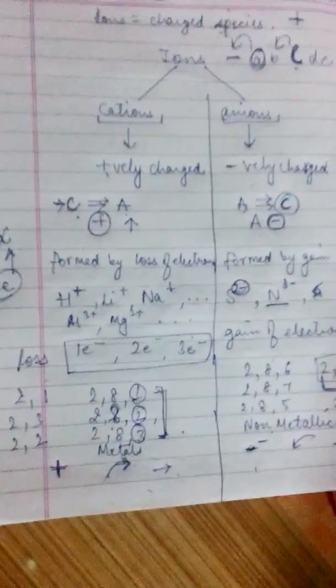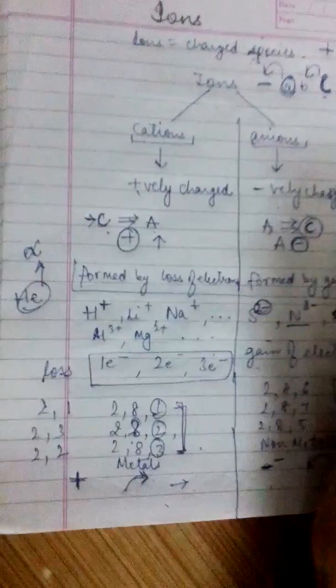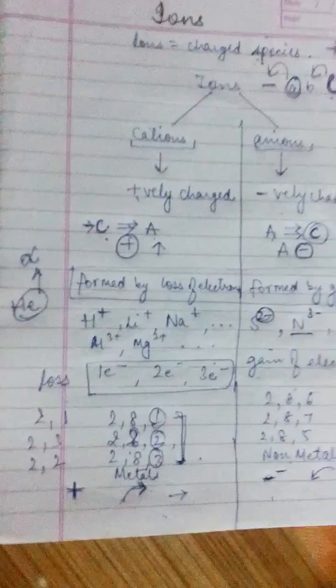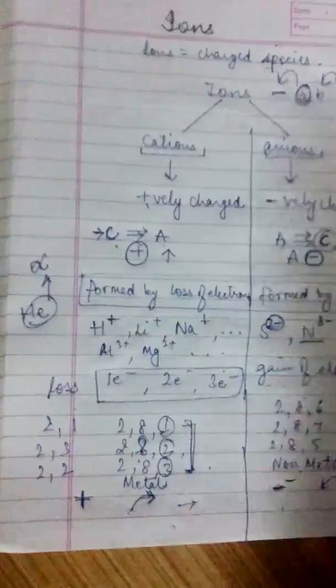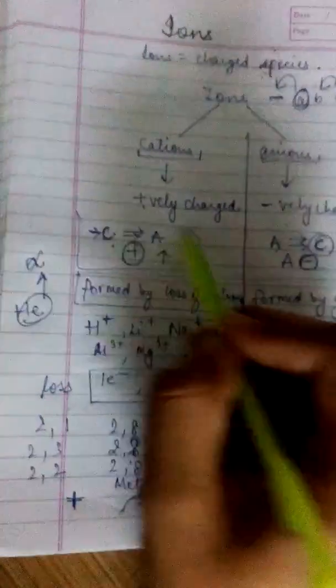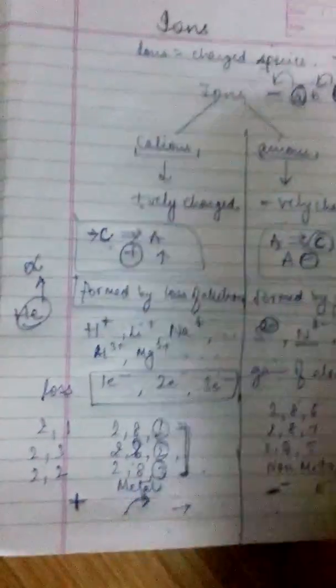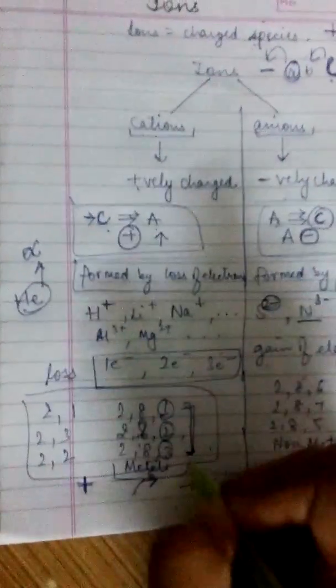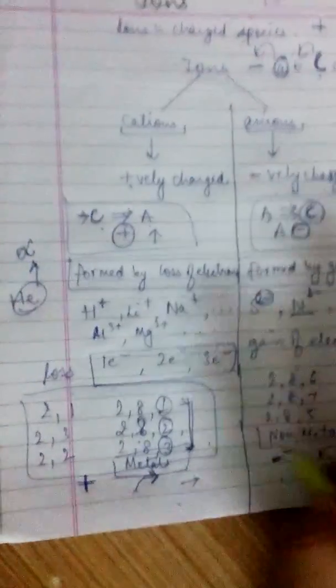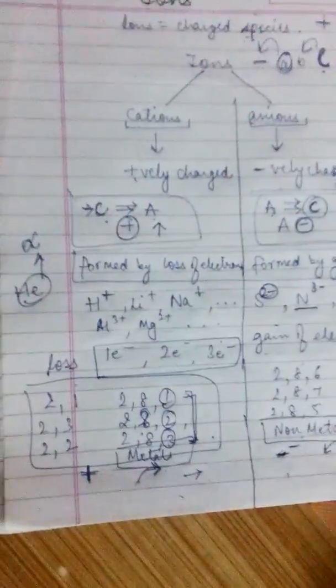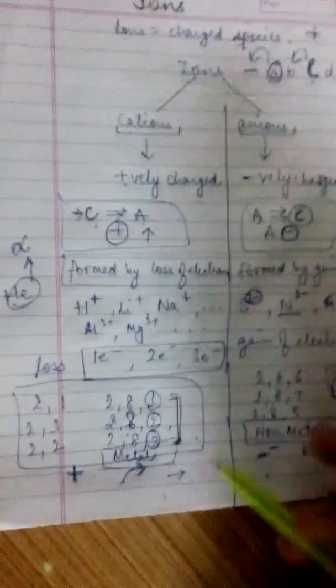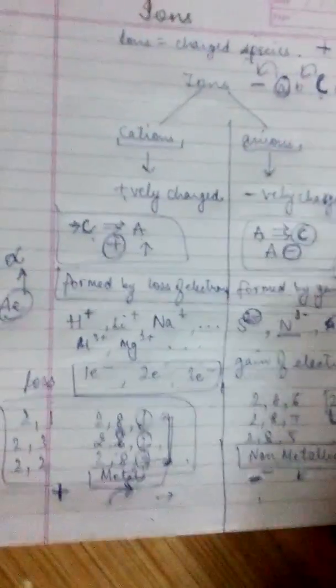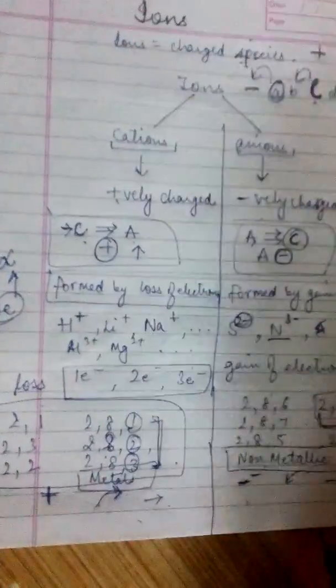So the main difference is formed by which type? Gain or loss. And positive charge or negative charge. The number of valence electrons. Is it a metal? Is it formed from metals or from non-metals? So these are the basic differences, the basic points of difference in between these two.